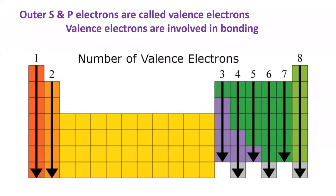Recall from chapter 7 that the outermost S and P electrons are called valence electrons. These electrons are the main electrons which determine how an element forms bonds. The number of valence electrons an element contains is indicated by its column number on the periodic table, and we'll skip over the d block.